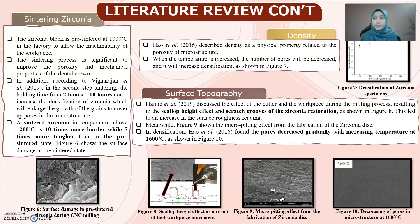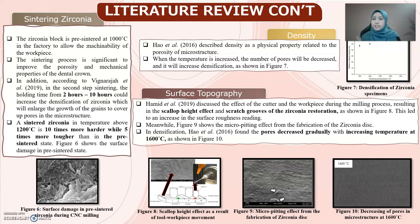Regarding sintering of zirconia, the zirconia block is pre-sintered at 1000 degrees Celsius in the factory, which allows the machinability of the workpiece. The sintering process is significant to improve the porosity and mechanical properties of the dental crown. According to Vidraja, in the second-step sintering, a holding time of 2 to 10 hours could increase the densification of zirconia, enlarging grain growth to cover pores in the microstructure. A sintered zirconia at temperatures above 1200 degrees Celsius is 10 times harder and 5 times tougher than in its pre-sintered state below 1000 degrees Celsius. Figure 6 shows the surface damage in pre-sintered zirconia during CAD/CAM milling.